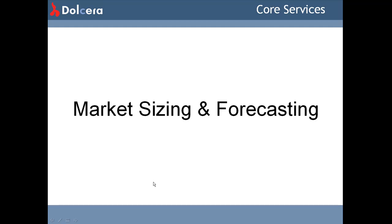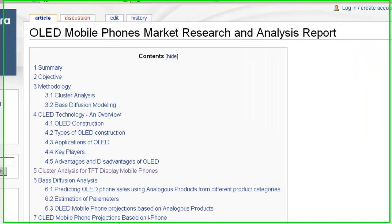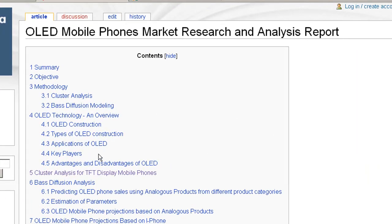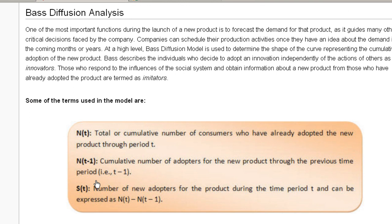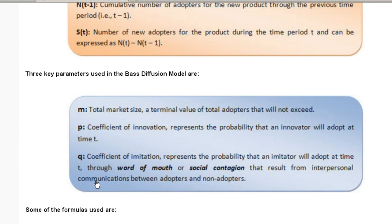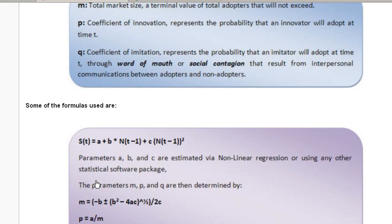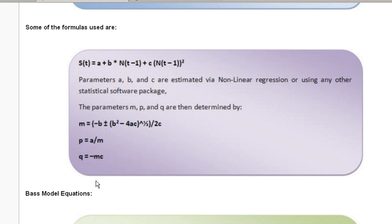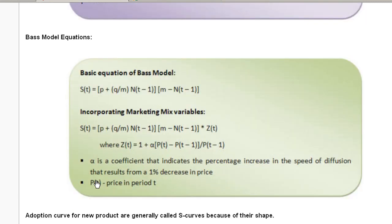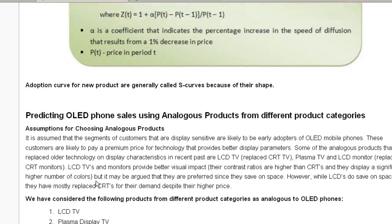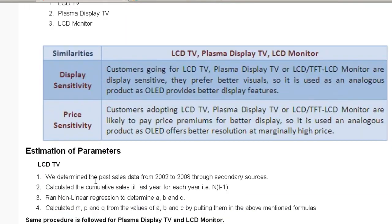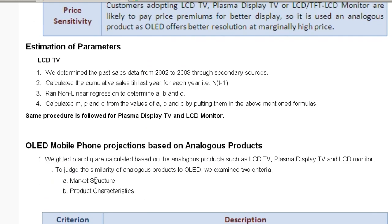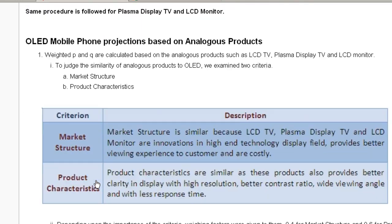Market forecasting. Looking at the same OLED mobile phones market research report, we have used the Bass Diffusion model to forecast the adoption of OLED mobile phones among customers. For validation purposes, we have made use of two proxy analogous products in order to determine the sales of OLED mobile phones.